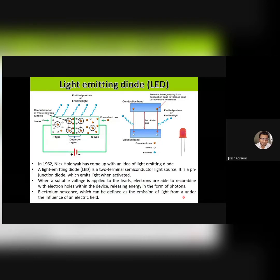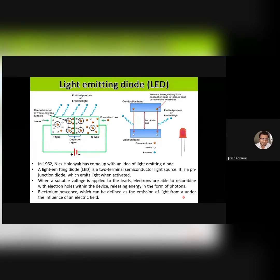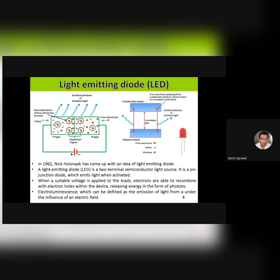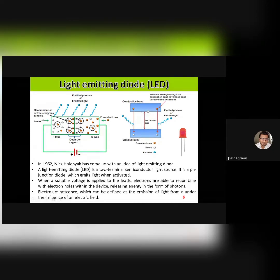One of the most basic optoelectronic devices is the light emitting diode. It is a two-terminal p-n junction device. When you apply sufficient forward bias, the holes from the p-region inject into the n-type region, and electrons — the majority charge carriers in the n-type — reach the p-type region, where recombination takes place. While electrons recombine from the conduction band to the valence band, the emitted energy will be equivalent to the forbidden gap of the material. This process is called electroluminescence.